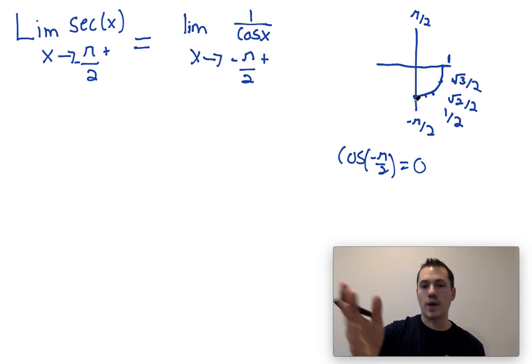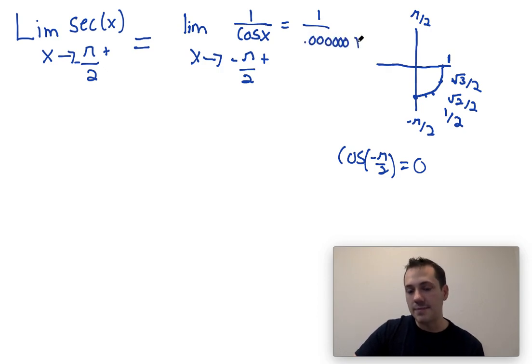Since we're coming at it from the right side, we can almost think of this cosine of x value on the bottom as just being a really small positive number, something like 0.00001. This goes on forever as you get closer and closer to negative π over 2 coming from the right. You just keep adding more and more zeros. But what we can see is that 1 over a very small positive number is going to equal infinity.